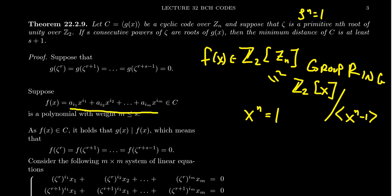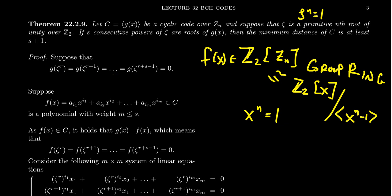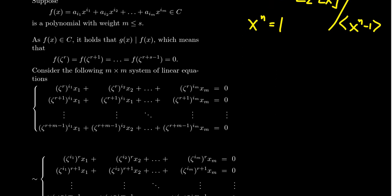We have this polynomial F(X) whose potentially non-zero coefficients total M ≤ S. Because F(X) belongs to the code and the code is a principal ideal, the generator G must divide F. Since ζ^R, ζ^{R+1}, ζ^{R+2}, etc., are all roots of G and G divides F, those roots of unity must also be roots of F. So F(ζ^R) = 0, F(ζ^{R+1}) = 0, and so on. With this observation, we create a system of M equations with M variables.